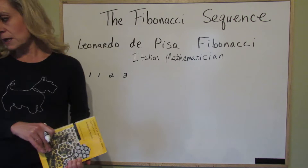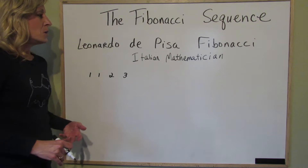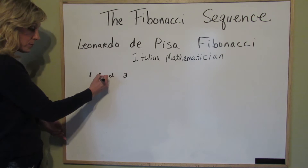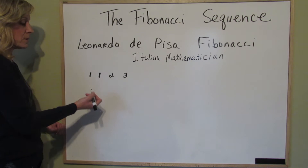So what is the Fibonacci sequence? Let's just get right to it. The Fibonacci sequence starts with the number 1, and then the next number is also 1. You add those two numbers together to get the next number in the sequence. So here's what's going on.